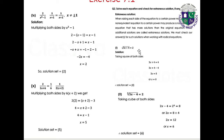Part 1: √(3x plus 4) equals 2. Taking the square of both sides: 3x plus 4 equals 4, so 3x equals 0, giving x equals 0. Solution set: {0}.